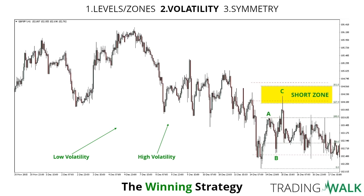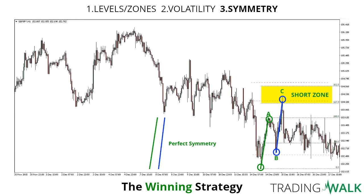The next thing we want is symmetry. What I mean by symmetry is that if we draw lines between the low and the A point, and between the B and the C point, we want those lines to be as similar as possible. When you have your low-to-A swing, you copy that line and place the low of that line at the lowest low of the B point. If the high of that line combines with your entry point, you will have a high probability trade. This one was almost a perfect symmetry — really powerful. I highly recommend you look at symmetry when trading.